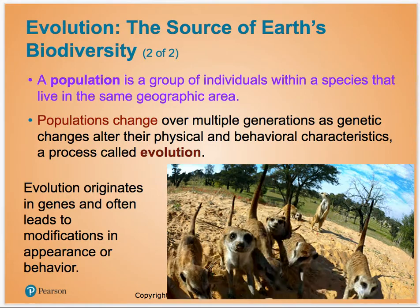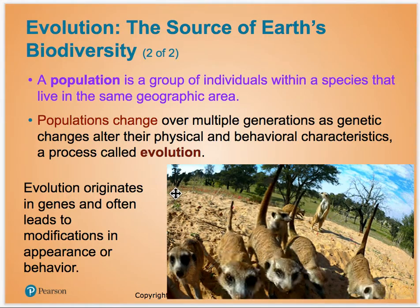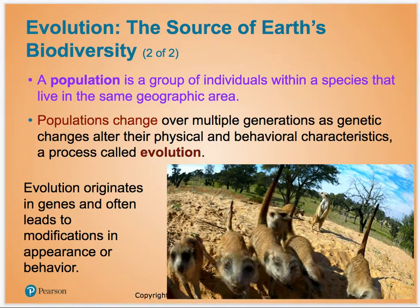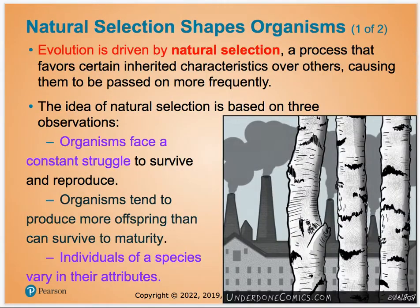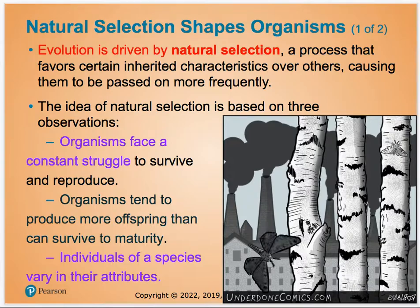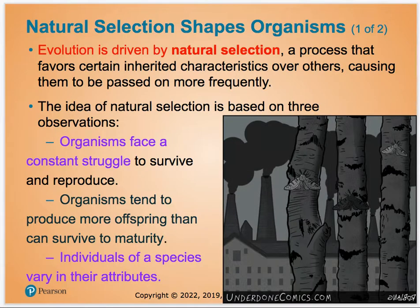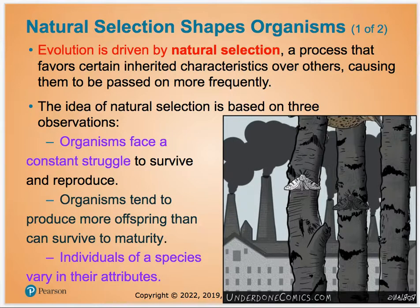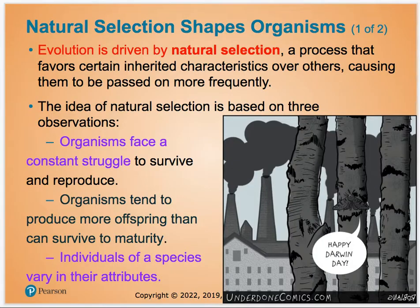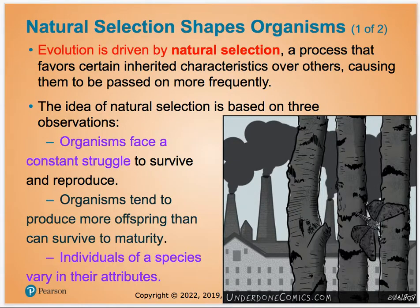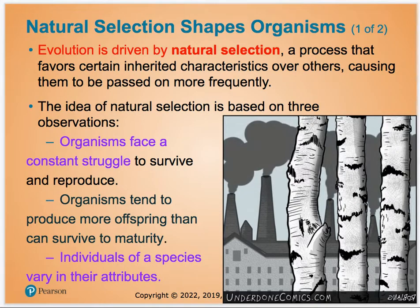First we're going to talk about evolution, or how populations change. Individuals don't evolve — an individual can't evolve. Like, I'm a rather short person; I can't just will myself to be taller. But populations over time can get taller or shorter. Since short genes are actually dominant over tall genes, it's more likely that our human population is going to get shorter over time.